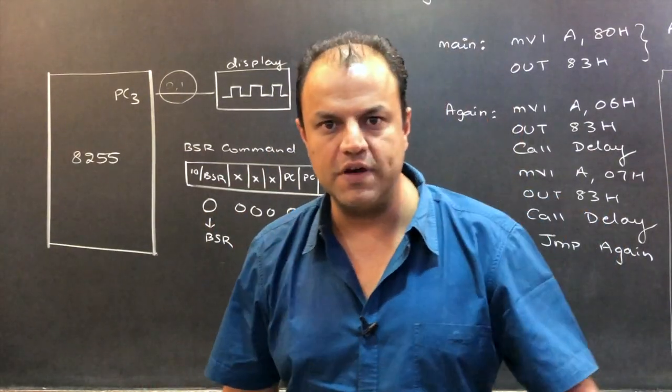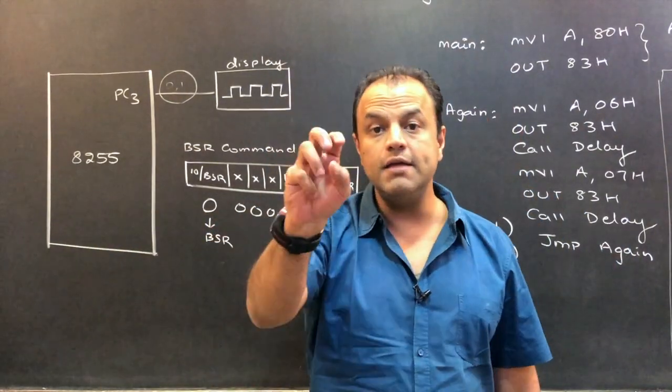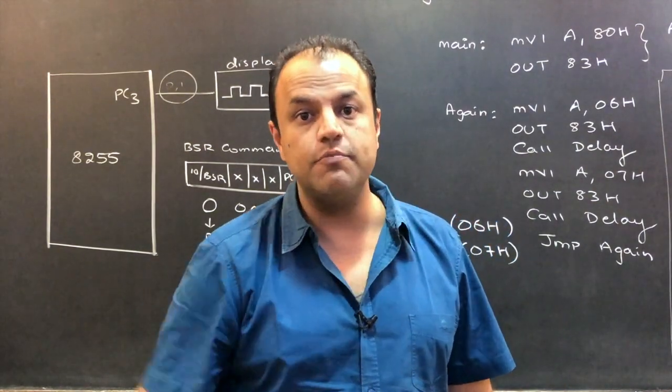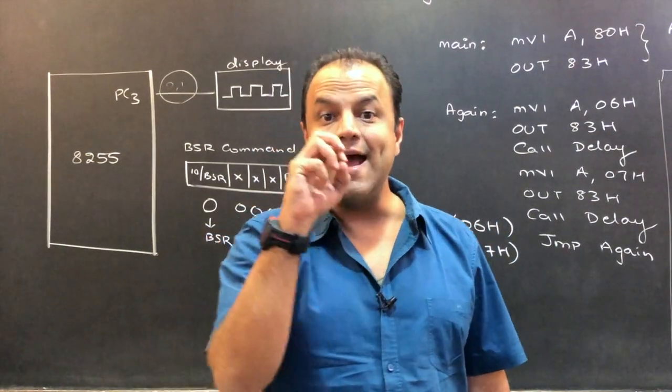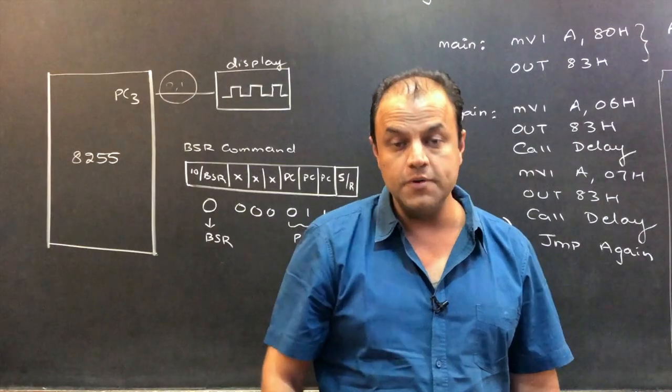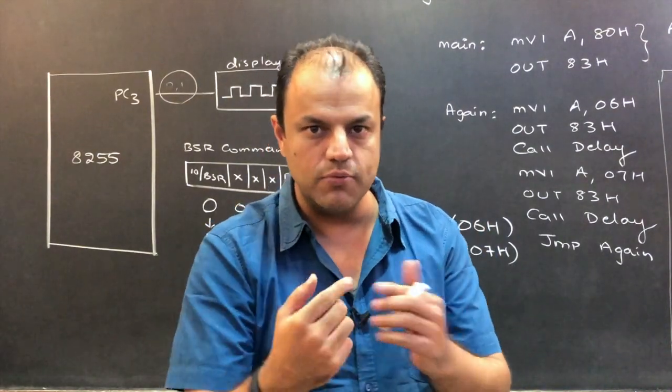80 is the address of port A. If 8255 is at an address like 80, 80 will be the address of port A. 81 will be of port B. 82 is of port C. And 83 is of the control word. So you send these commands to the control word one by one.